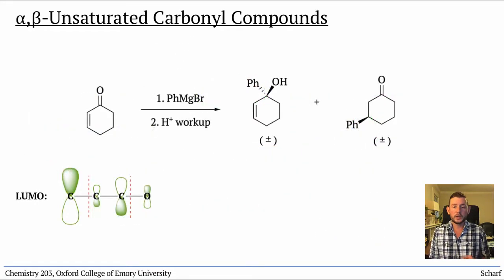So, the outcome we might have predicted arose from the Grignard reagent reacting at this part of the LUMO. We call this direct addition to the alpha-beta unsaturated carbonyl.